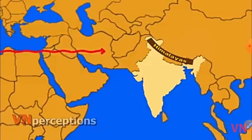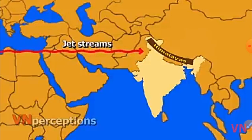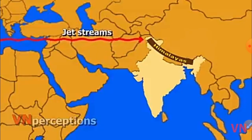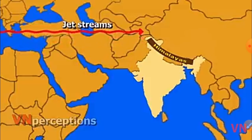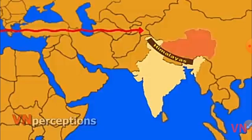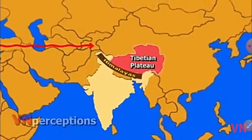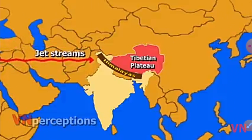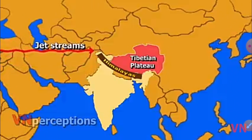Over India, this jet stream flows south of the Himalayas throughout the year except in summer. In summer, the subtropical westerly jet stream moves north of the Himalayas because of the movement of the sun. The Tibetan Plateau is heated up and develops a low pressure area, which pulls the jet stream towards the north.